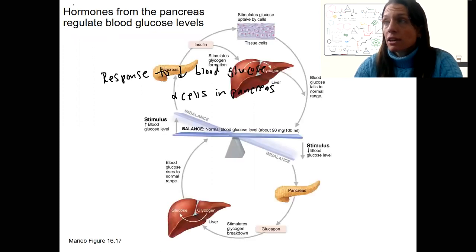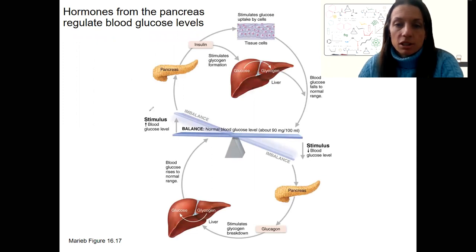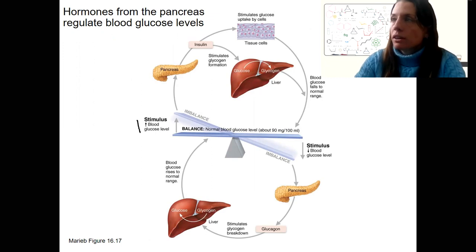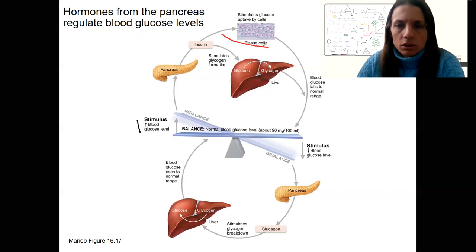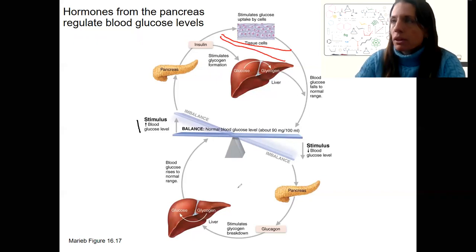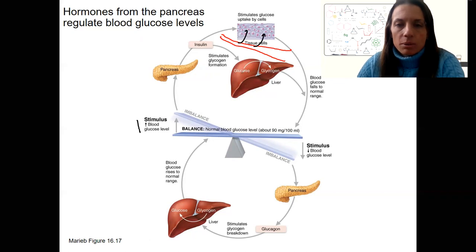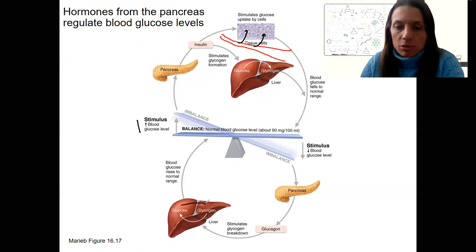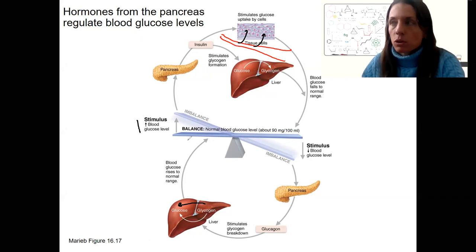This picture nicely shows both stimuli. High blood glucose leads to glucose uptake by cells — glucose moves from the blood into those cells — and is also converted to glycogen. For low blood glucose, that stimulus triggers glycogen breakdown so glycogen becomes glucose. Glycogen is stored in the liver as well as skeletal muscles, causing glucose to return to the normal range.